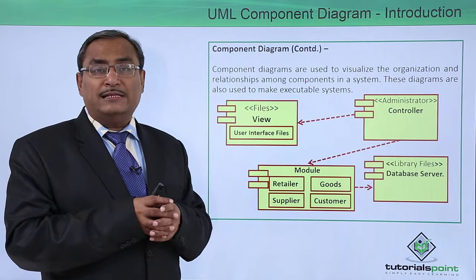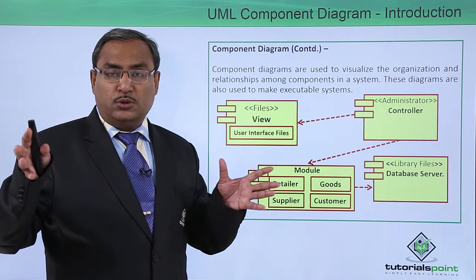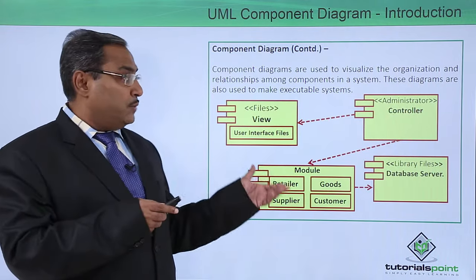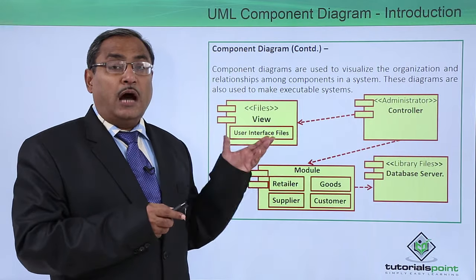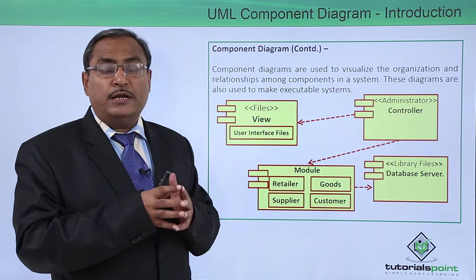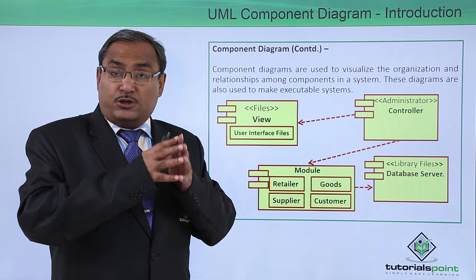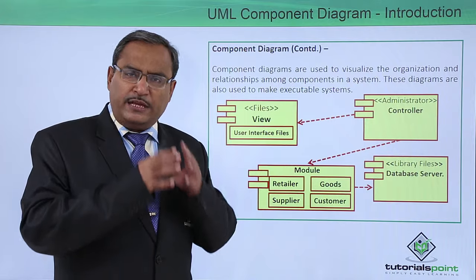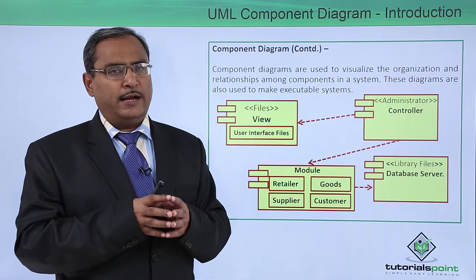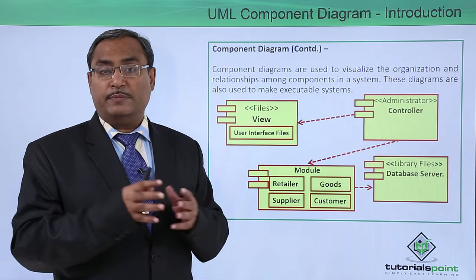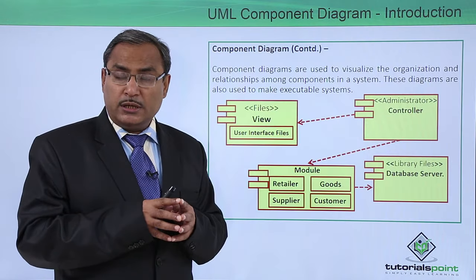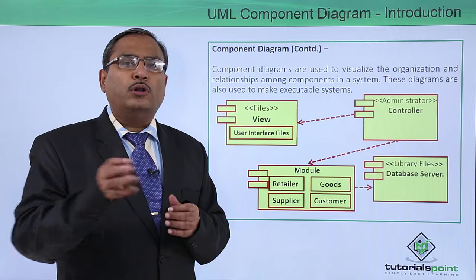These components might be localized on a single machine, or distributed across multiple machines connected by a computer communication network. So the component diagram also depicts how these components interact and interface with each other, and which component comprises which modules. It depicts the software architecture. Each UML diagram has its own purpose, and the component diagram is the one where the system architecture — what the different components are, how they interact and reference each other — is depicted.